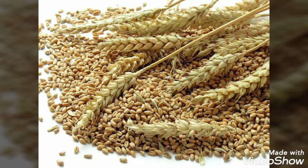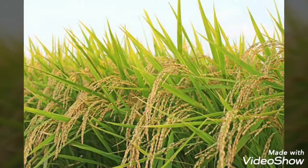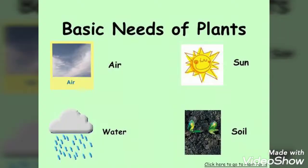Plants store food in their seeds for baby plants. Examples: wheat, pea, maize, rice. Most plants grow from seeds. There are different kinds of seeds.